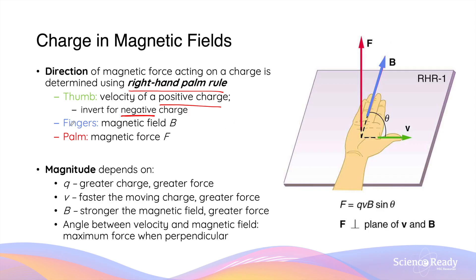Your fingers will point towards the direction of the magnetic field. And finally, the direction your palm is facing will be towards the same direction as the magnetic force. In this picture, your thumb points to the right, your fingers towards the top of the screen — that leaves the palm of this person facing upwards. So this is the direction of the force.